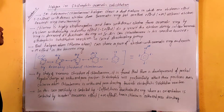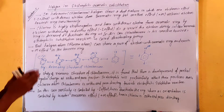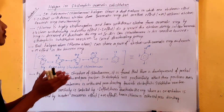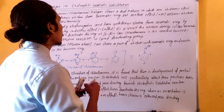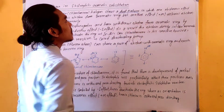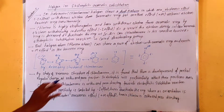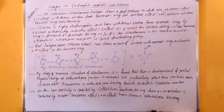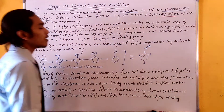First of all, in halogens — that means in chlorobenzene — the halogen shows a dual nature. It shows two effects: one is the electromeric effect, that means the minus I effect, and another one is the plus M effect, that means the mesomeric effect.